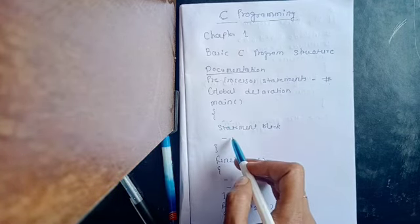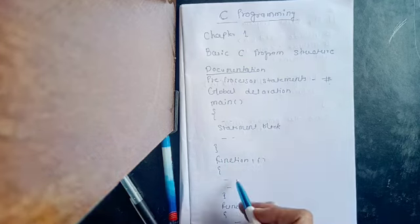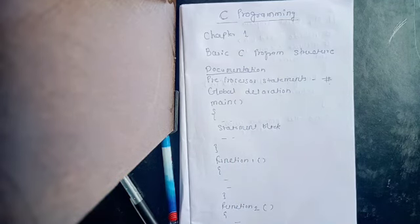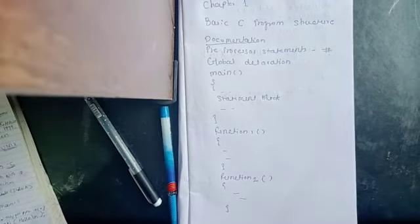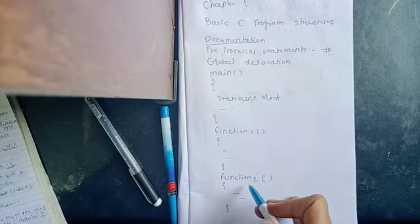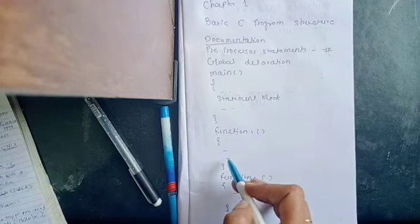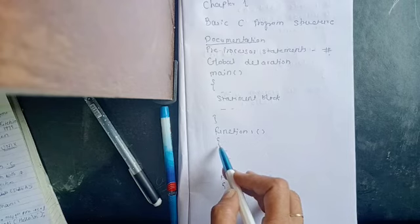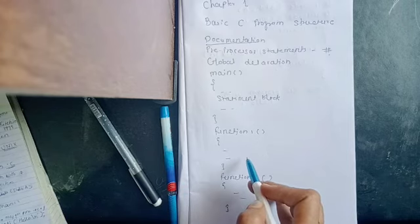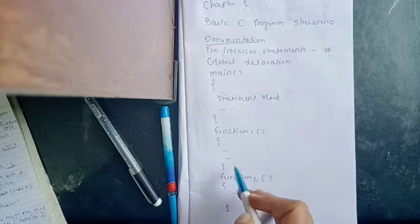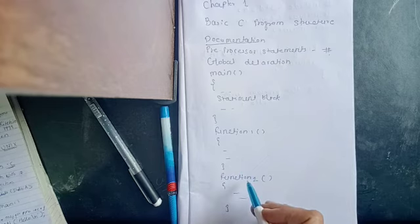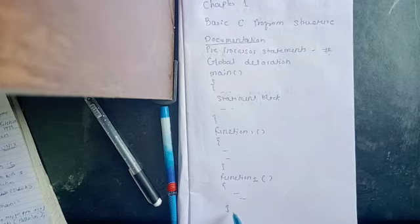Here you will be writing the statements, then which all functions you will be writing in the program. So you will be writing the function name followed by the parenthesis, then you will be writing the code or statement block for that program. As many functions you are writing, you will be having those many blocks.